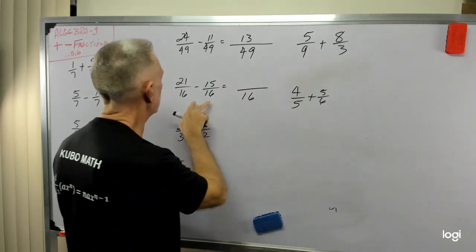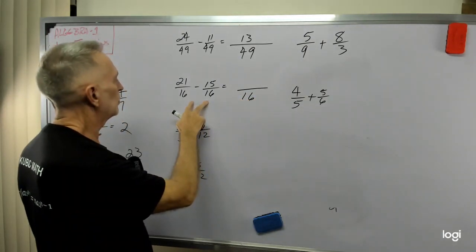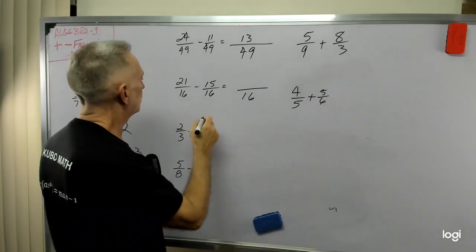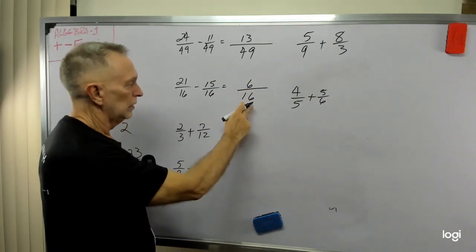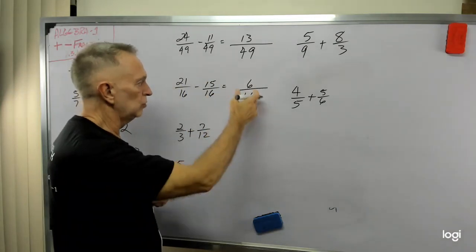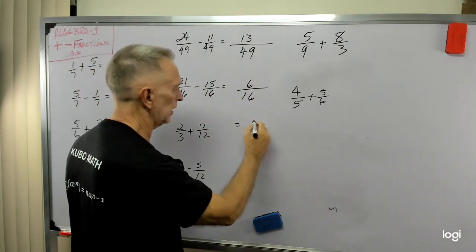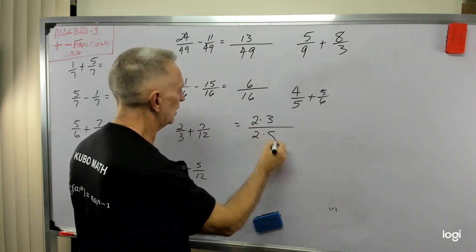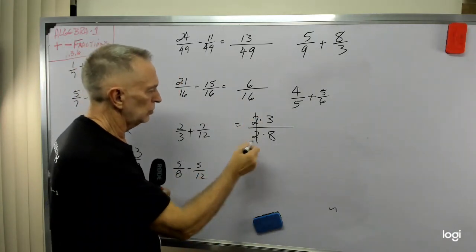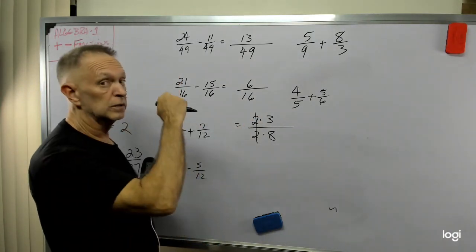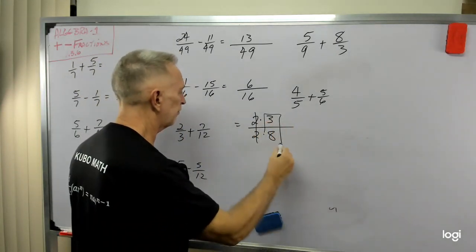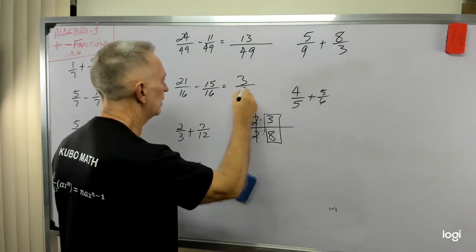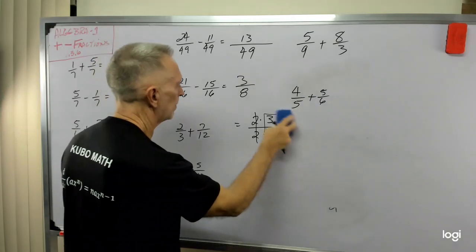This one. I have 16 as my common denominator. 21 minus 15 is 6. Now you can see immediately 2 will go into each of these. So let's rewrite the 6 as 2 times 3. 16, let's write it as 2 times 8. These 2s, 2 divided by 2 is 1, and it leaves me with the fraction 3 over 8. So this one reduces to 3 over 8.